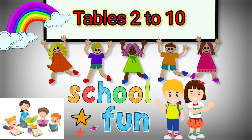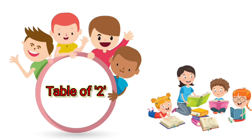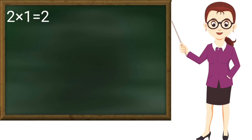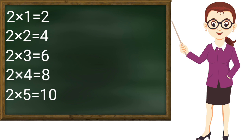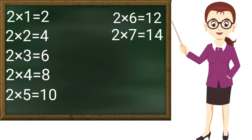Speak with me. Table of 2: 2 ones are 2, 2 twos are 4, 2 threes are 6, 2 fours are 8, 2 fives are 10, 2 sixes are 12.